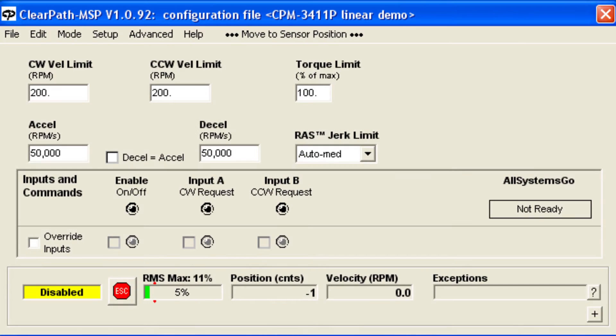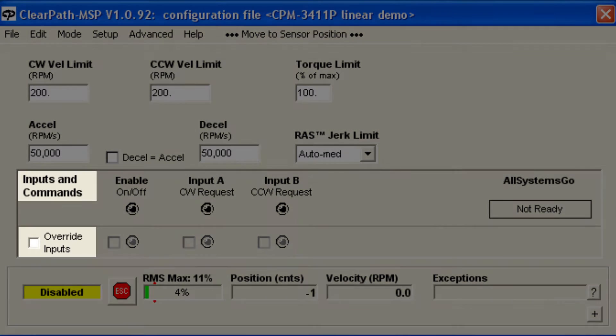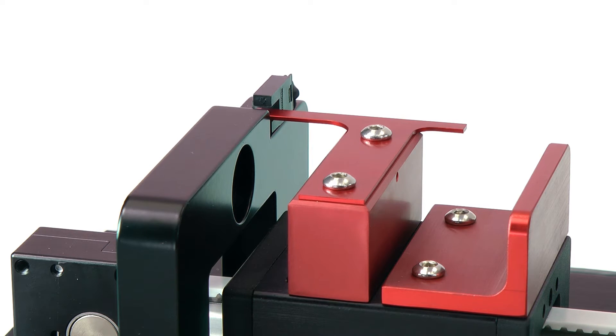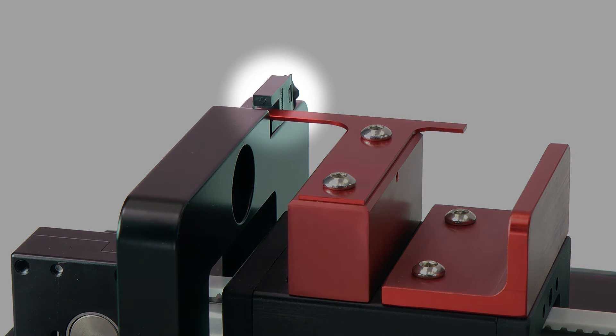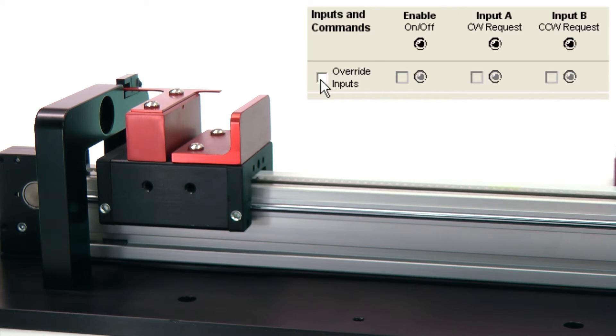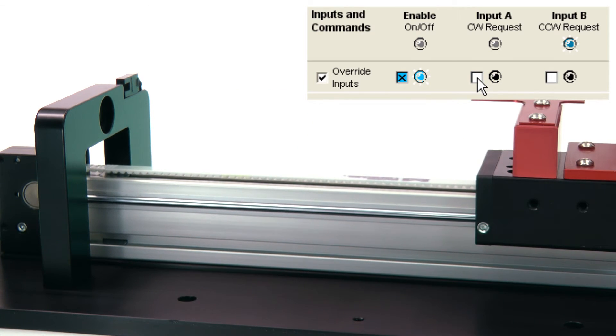All of ClearPath's operating modes have a software override feature that allows you to test and experiment before you have your wiring completed. For example, let's say I want to find out whether to wire this optical sensor to input A or input B. With the speed set low for safety, you can easily test this in software first. The A input causes motion away from this sensor, so this sensor needs to stop motion tied to the B input. It must be wired in series with input B.